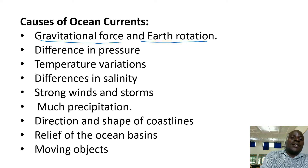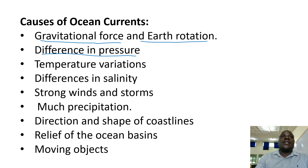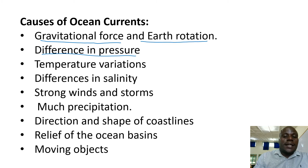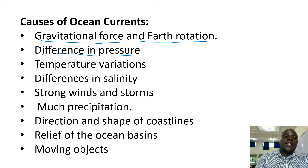Then we have difference in pressure zones. This is pressure on the sea or on the ocean — it is not atmospheric pressure. In the sea or in the ocean we have different pressure zones, and using some science, the part of the ocean where pressure is high is where ocean currents come from, going to the part of the sea where pressure is low.